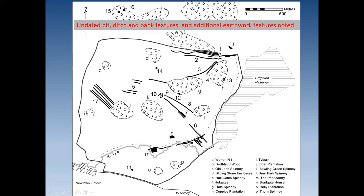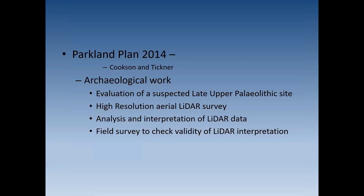Additional undated features included mostly linear features — ditches or gullies possibly with banks — curious sinuous curvy deep-sided ditches in the top area of the park, long features running from the southeast towards the middle, and a strange area of what looked like pitting in the middle of the park. The 2014 management plan comprised an evaluation of the late Palaeolithic site, the high-resolution aerial LiDAR survey, and field survey to check the validity of findings.